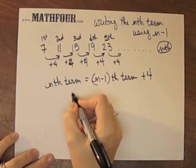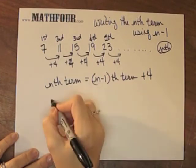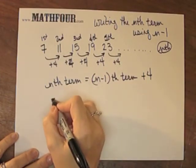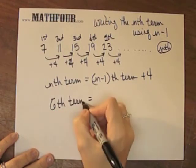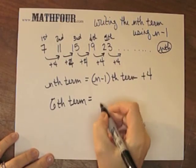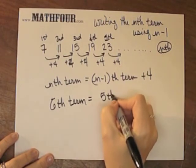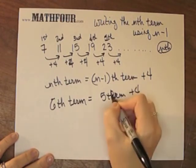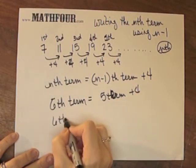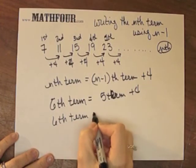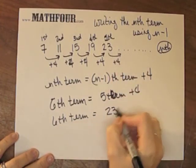I want the 6th term. I'm sorry, let's say 6th term. I'm going to ask for the 6th term, which is this guy right here. So I'm going to take the 5th term and add 4. So the 6th term is 23 plus 4.